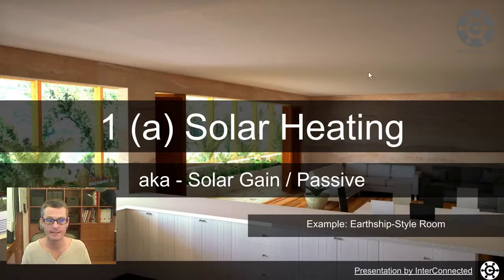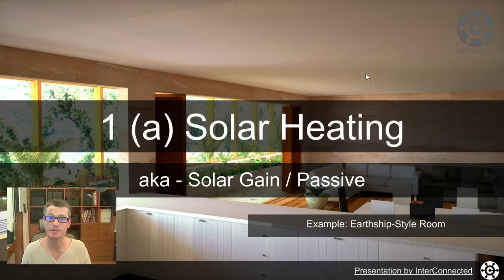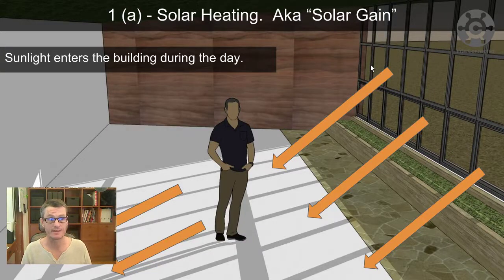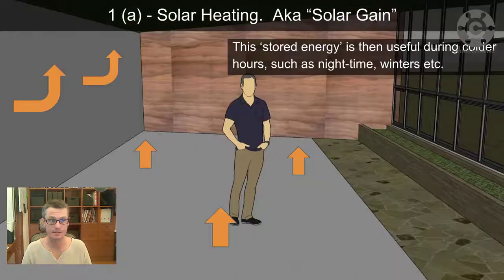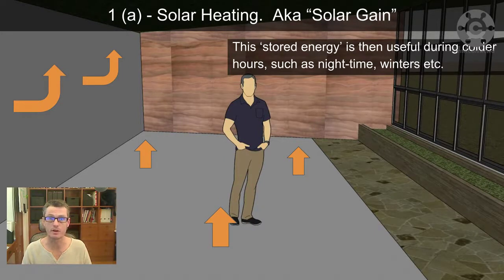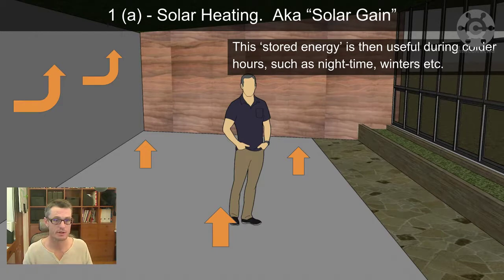Let's have a look at solar heating, also known as solar gain or passive. You might have come across the term passive housing or passive house designs if you've been investigating eco homes at all. It's fairly simple. Looking at this slide, sunlight enters the building during the day. The floor, walls, etc. absorb energy and get hotter during the day. This stored energy is then useful during colder hours such as nighttime or winters. They'll be radiating that heat back when the temperature of the room drops down.